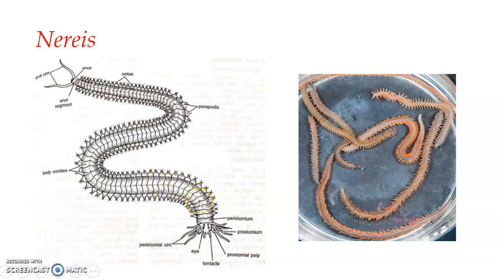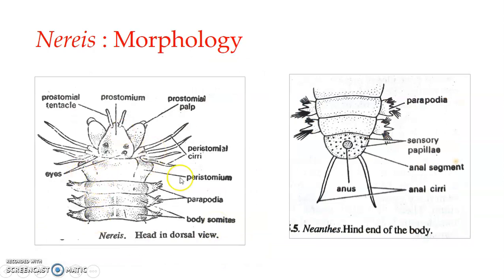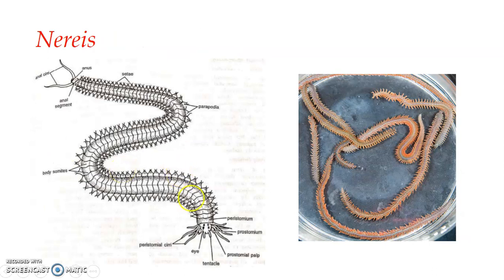The number of segments is species-specific and almost constant for a species. The whole body is divided into three regions: the head region, a very long trunk, and the last part which is the pygidium. Nereis possesses a well-developed, conspicuous head region, which corresponds to its active life and predacious habits. The head region consists of two parts: the peristomium and the prostomium.